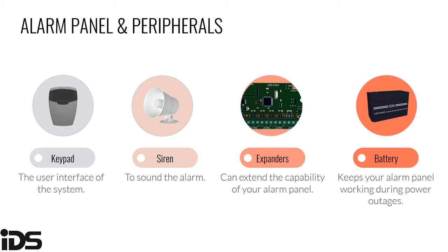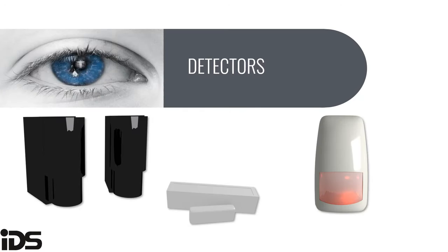Those are the basic, most common alarm system components for a typical installation. More specific peripherals will be discussed in future training on specific alarm panels. Detectors and sensors are used to detect intrusion in a protected area. A door contact protects openings such as doors and windows. It has two parts: the magnet placed on the opening side, and the reed switch — the part with the wire — placed on the fixed side. A reed switch is a thin glass tube containing two very thin metal plates that are close but not touching.